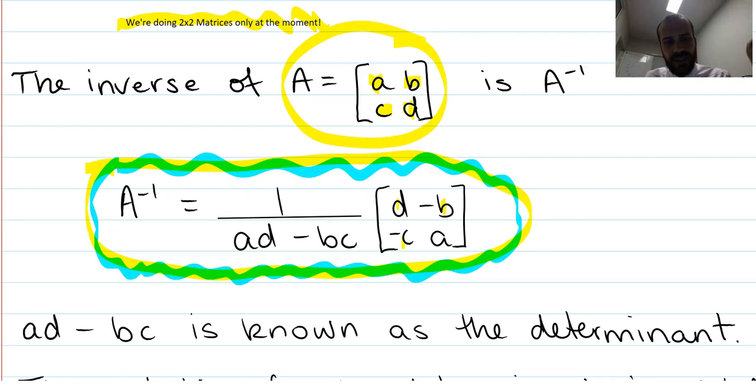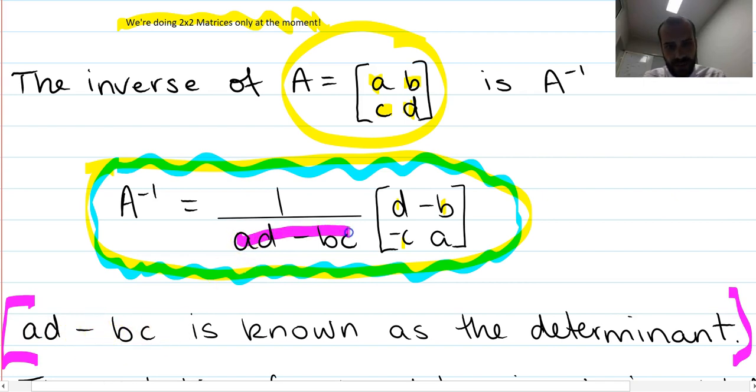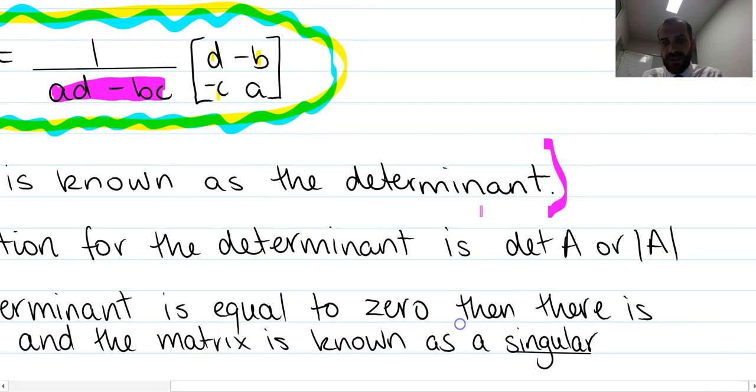An important note before we get into the step by step is this one here. A, D minus B, C, which is this value here, is known as the determinant of matrix A. So A times D minus B times C is the determinant of A. We can call that det A or these two lines A.